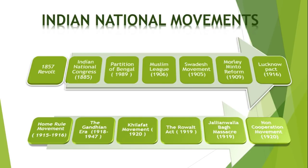The Rowlatt Act, 1919. During the First World War, the suppression of freedom fighters had continued — they were hanged and imprisoned. To suppress all this, the government decided to arm itself with power. In March 1919, it passed the Rowlatt Act, which authorized the government to detain any person without trial. This came as a sudden blow for Indians, because during the First World War, Indians had been promised an extension of democracy.